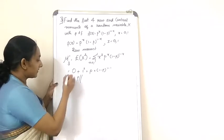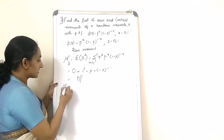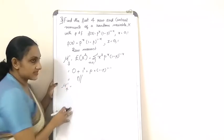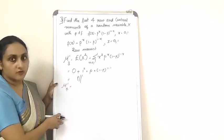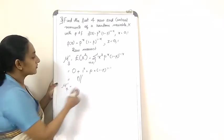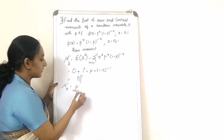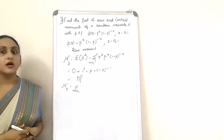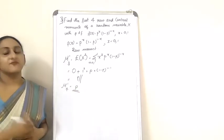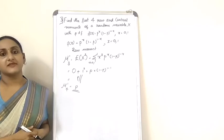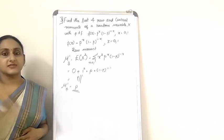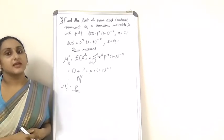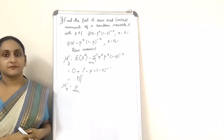From this you get a general idea of what μ₄' is — the fourth raw moment is also equal to p. So in this problem, all the first four raw moments are the same and equal to p.